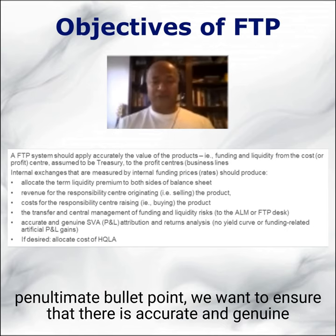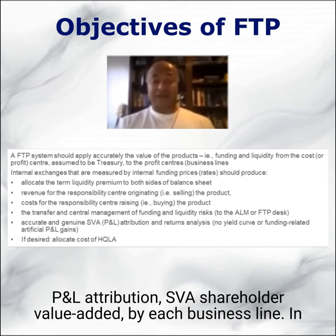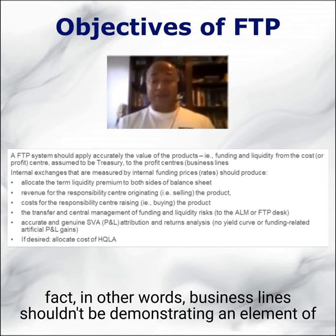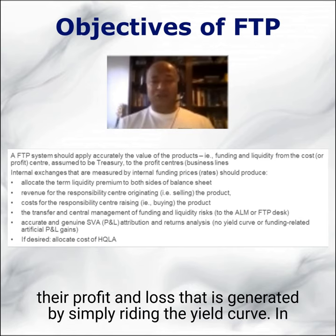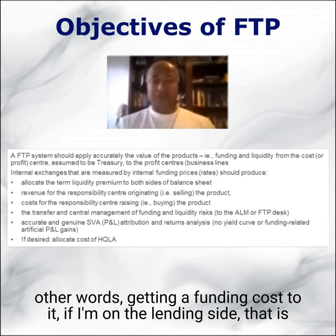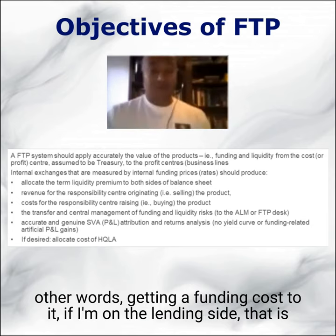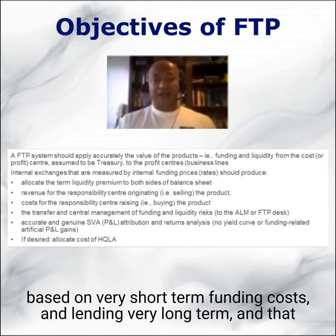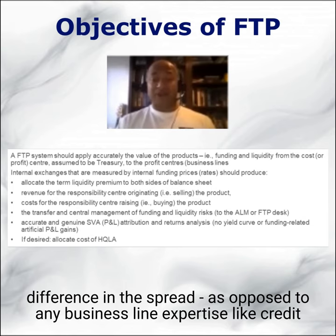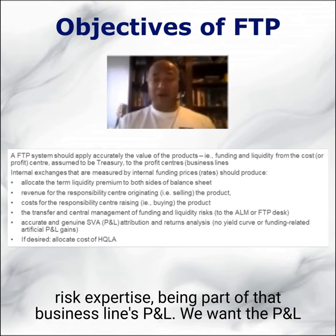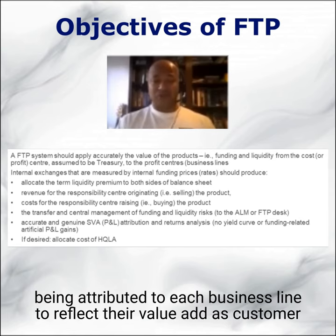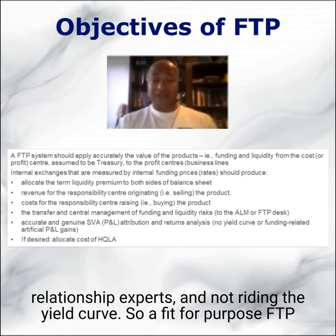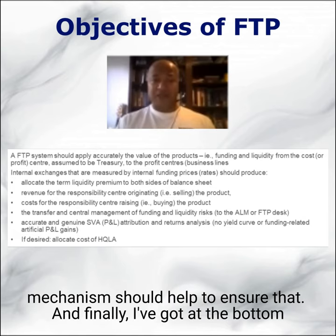Looking at the penultimate bullet point, we want to ensure accurate and genuine P&L attribution — shareholder value added (SVA) — by each business line. Business lines shouldn't be showing profit that is simply generated by riding the yield curve — that is, getting a short-term funding cost on the lending side and lending very long term, with that spread difference rather than any genuine business line expertise like credit risk being part of their P&L. We want the P&L attributed to each business line to reflect their value add as customer relationship experts, not yield curve riding. A fit-for-purpose FTP mechanism should help ensure that.